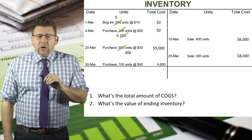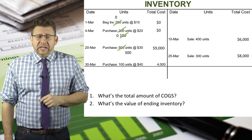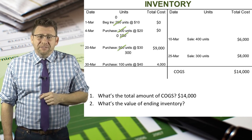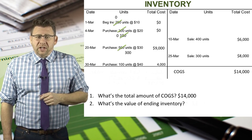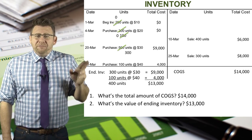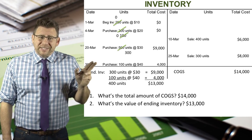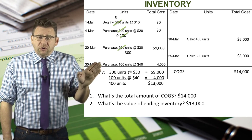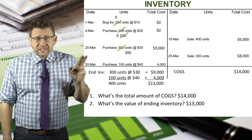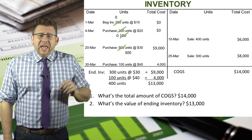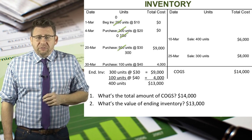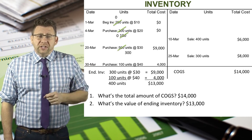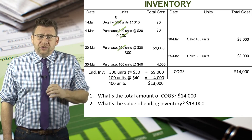So what's the total amount of cost of goods sold and what's the value of the ending inventory? Cost of goods sold is the total of the credit side of the inventory account, which in this case is $14,000. Ending inventory is the remaining amount on the debit side: 300 units from the March 20 purchase with a total cost of $9,000 and 100 units from the March 30 purchase with a total cost of $4,000. This totals 400 units and a value of $13,000.